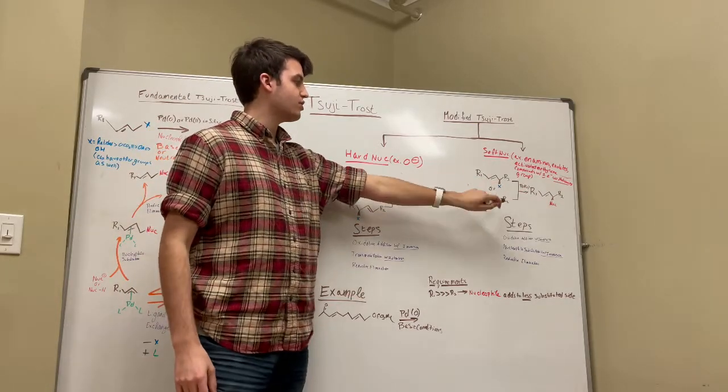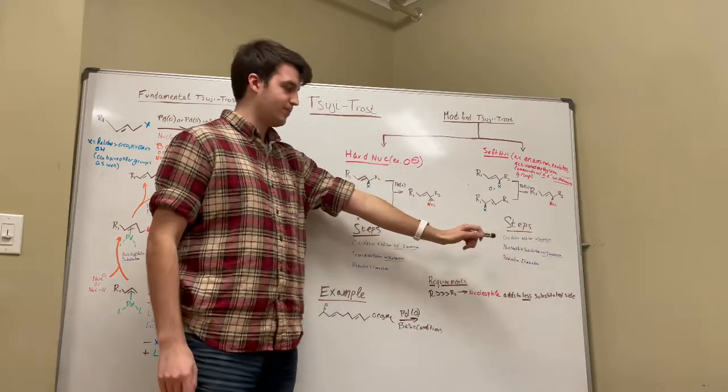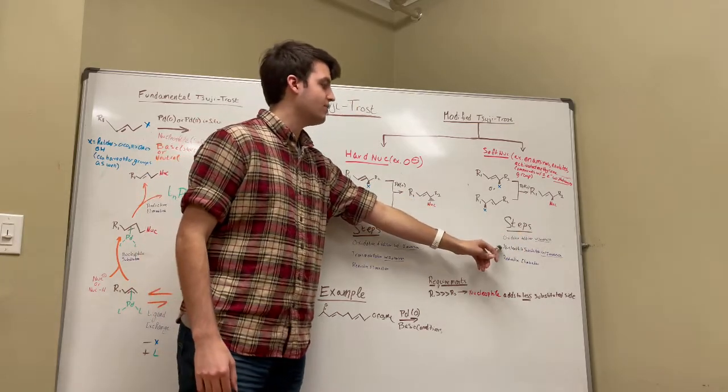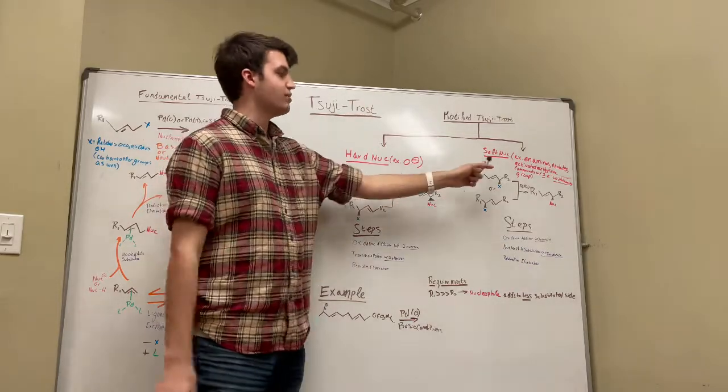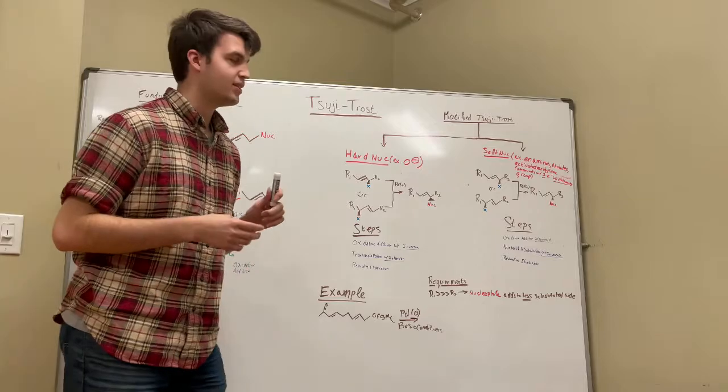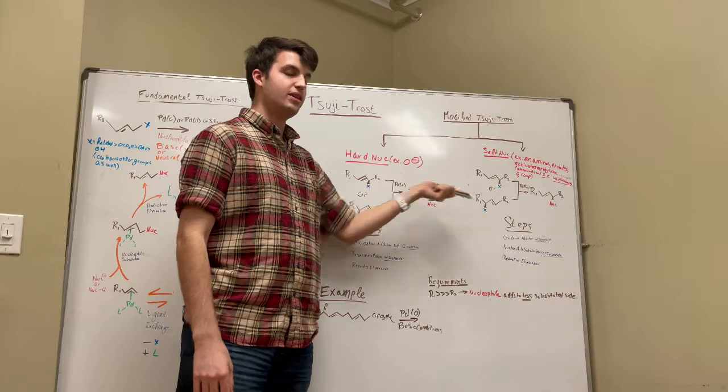And so, this retention happens because we do an oxidative addition with inversion, and then a nucleophilic substitution with inversion, and then a reductive elimination. So, this is actually retention by way of double inversion. You invert the stereochemistry twice, so that in the end, it ends up being the same as in the beginning.